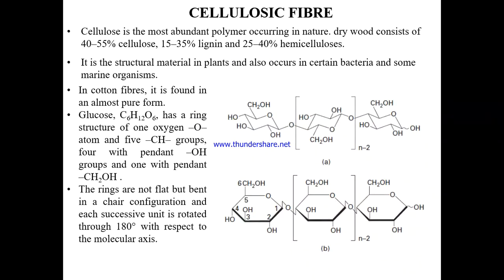Coming to the structure of cellulose fiber — cellulose is the most abundant polymer in nature. Dry wood consists of 40–55% cellulose, 15–35% lignin, and 25–40% hemicellulose. Wood is the largest source of cellulose, which is why it is used for manufacturing regenerated cellulose fiber. Cellulose is also a structural material in plants and occurs in certain bacteria and some marine organisms.